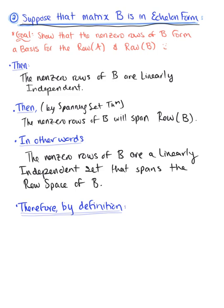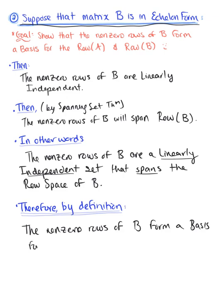Therefore, by definition, the nonzero rows form a basis for the row space of matrix B and the row space of matrix A, because it is a common row space. The nonzero rows of matrix B form a basis for the row space of matrix B, which is a common row space with that of matrix A. The second portion of our proof is complete.